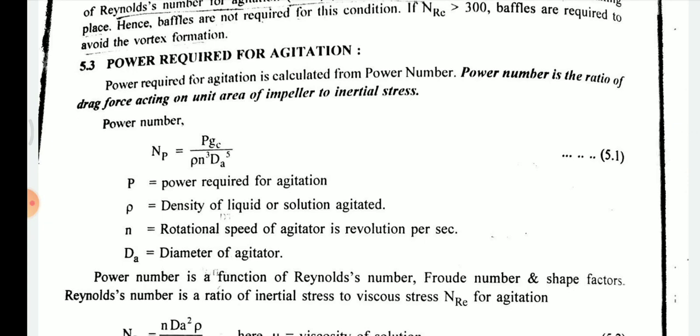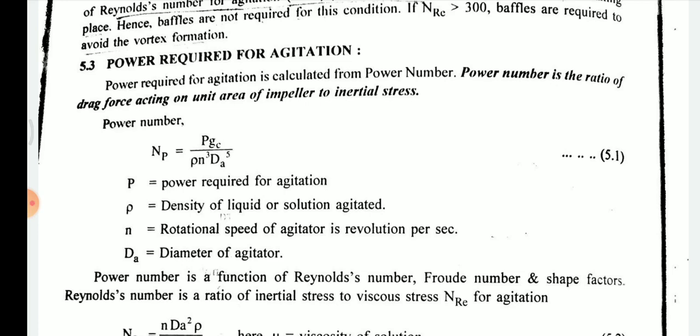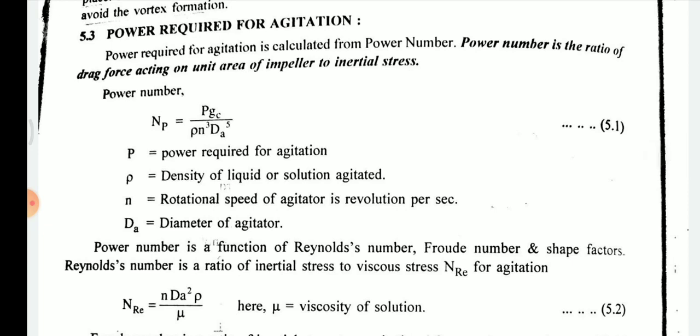The power required for agitation is calculated from the power number. Using the power number we calculate the power requirement for agitation. The power number is defined as the ratio of drag force acting on a unit area of the impeller to inertial stress.